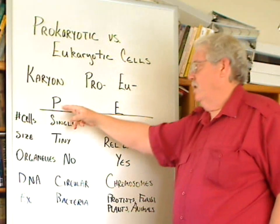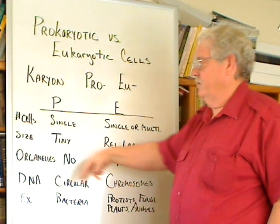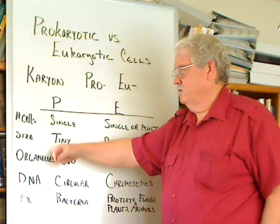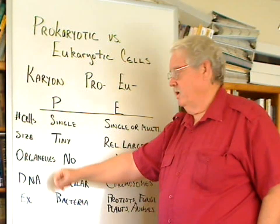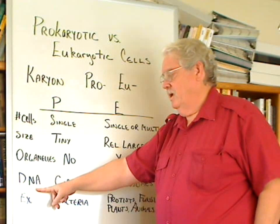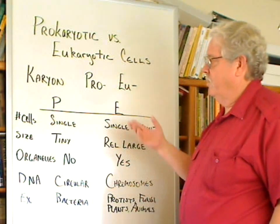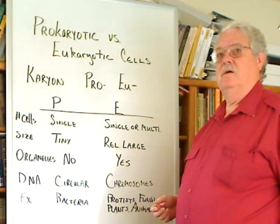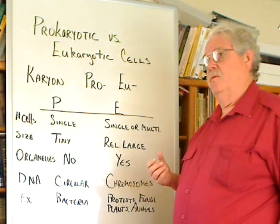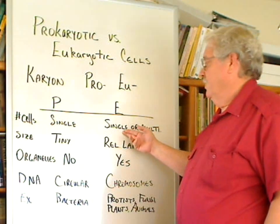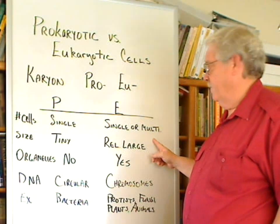In comparing prokaryotic versus eukaryotic relative to the typical number of cells, their general size, presence or absence of organelles, the kind of DNA they have, and examples — we find that prokaryotic are typically single-celled organisms. Sometimes they will form chains or groups, but they're not really multicellular, whereas eukaryotic can be single-celled or multicellular.